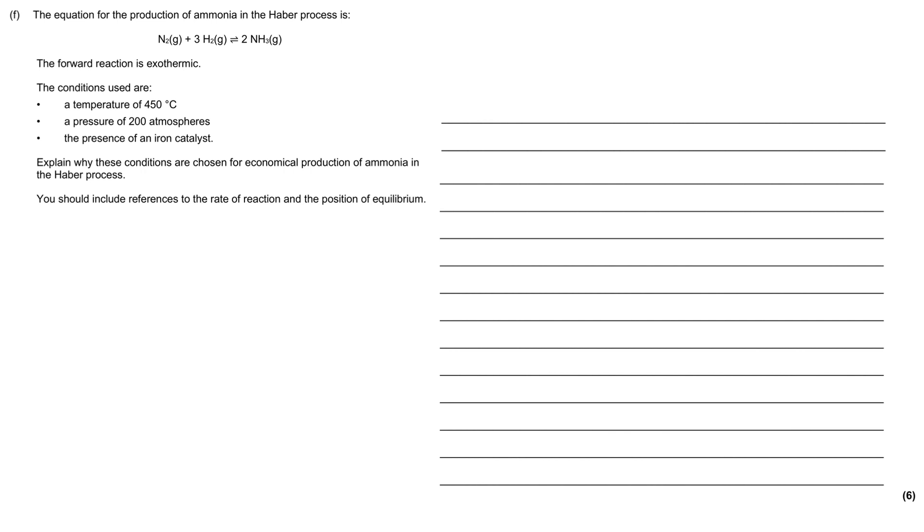The equation for the production of ammonia in the Haber process is shown here. We've got nitrogen reacting with hydrogen, and this is a reversible reaction producing ammonia. We're told that the forward reaction is exothermic.